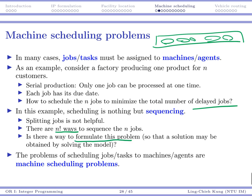Maybe formulating this problem as an integer program and using a solver may help us solve it. The problem of doing this kind of job scheduling is typically referred to as machine scheduling — even though sometimes we schedule jobs to agents or workers. We call them machine scheduling problems because originally this problem came from factories.